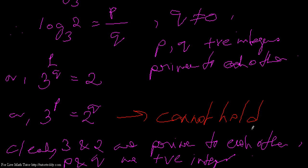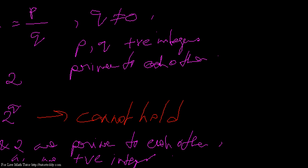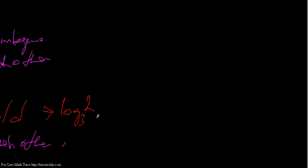Therefore we can say that our assumption which we assumed, that log 2 base 3 is a rational number, that cannot hold. This implies that log 2 of base 3 cannot be a rational number.